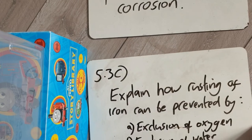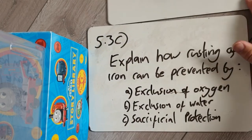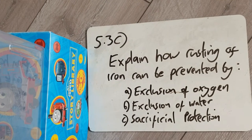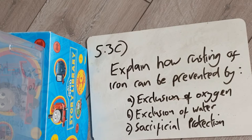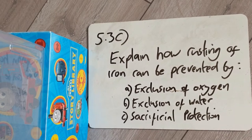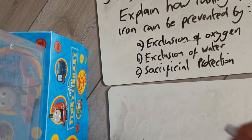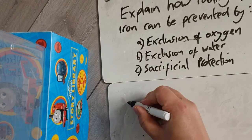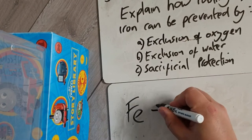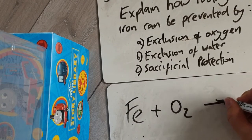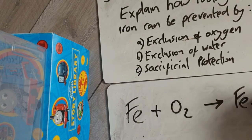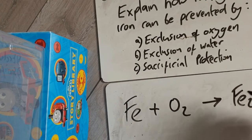Rusting is the special name for the corrosion of iron. Now, to explain how rusting of iron can be prevented: by exclusion of oxygen, exclusion of water, and sacrificial protection.